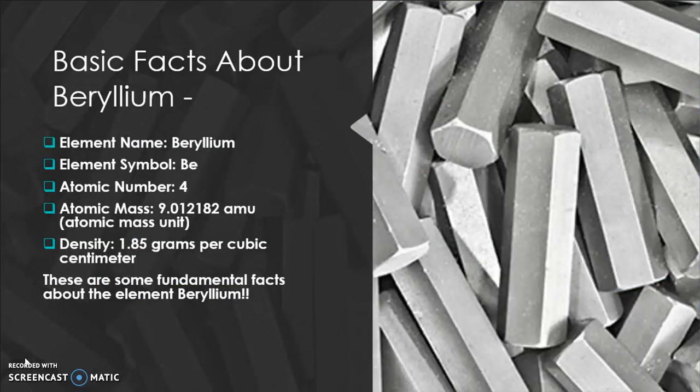Here are some basic facts about beryllium. The element symbol of beryllium is Be. Beryllium has an atomic number of 4, meaning it has 4 electrons and 4 protons. Beryllium has 5 neutrons. The atomic mass of beryllium is 9.012182 AMU — AMU stands for Atomic Mass Unit. The density of beryllium is 1.85 grams per cubic centimeter.